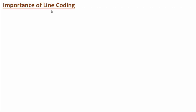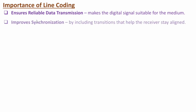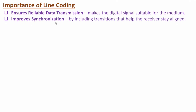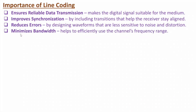Now, the importance of line coding: line coding converts digital data into digital signals — with suitable digital signals one can ensure reliable data transmission. Line coding improves synchronization; transitions in the signal allow proper synchronization at the receiver. Line coding reduces errors by using waveforms that are less sensitive to noise and distortion, resulting in minimum errors at the receiver.